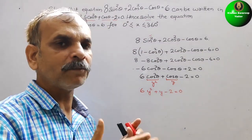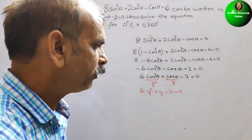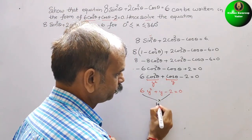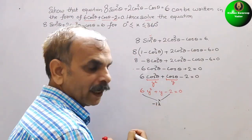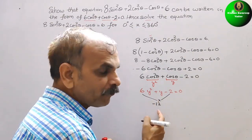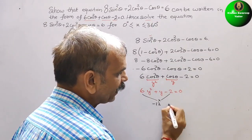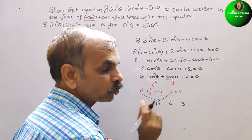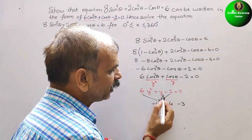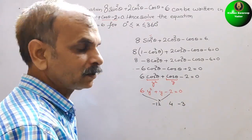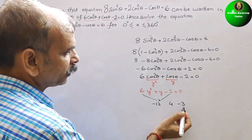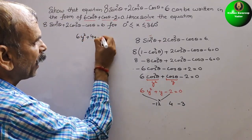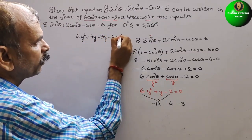We use middle term splitting. Multiply 6 × (-2) = -12. We need two factors of -12 that sum to 1: these are +4 and -3, since 4 × (-3) = -12 and 4 + (-3) = 1. So we write: 6y² + 4y - 3y - 2 = 0.